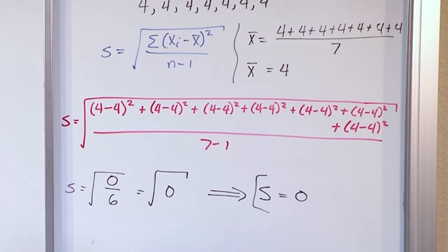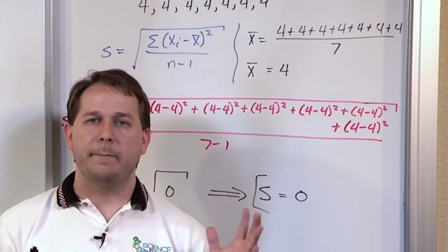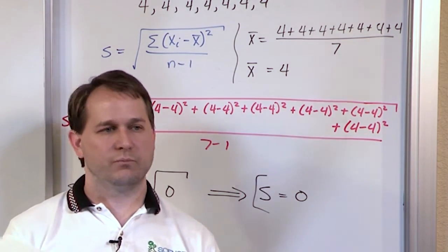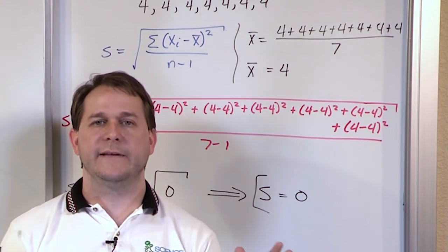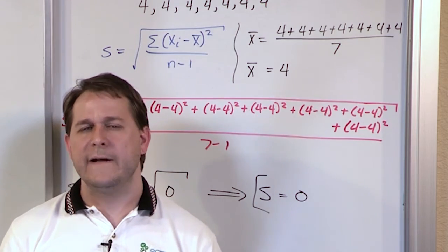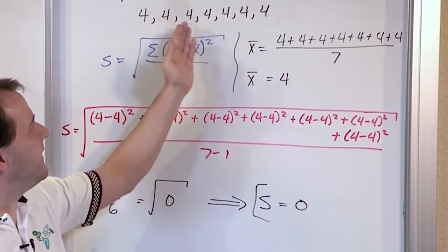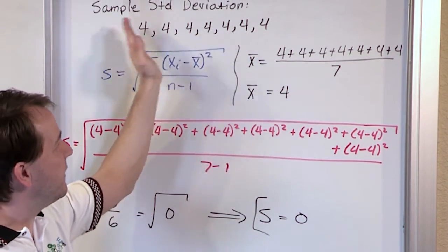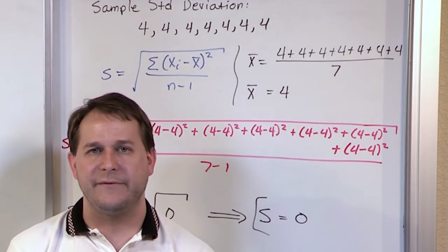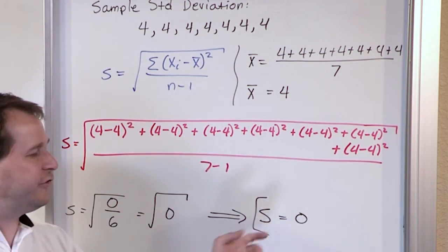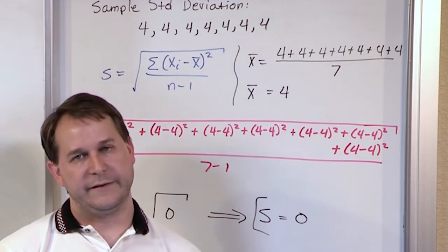The sample standard deviation is 0, and the math supports common sense based on the definition. The standard deviation measures how far your data set is spread about its mean on average. Since all the data points are the same, the mean is 4, and because everybody's identical, there really is no spread about the mean. Everybody's on top of it, so the standard deviation is 0 — it indicates everybody's on top of each other.